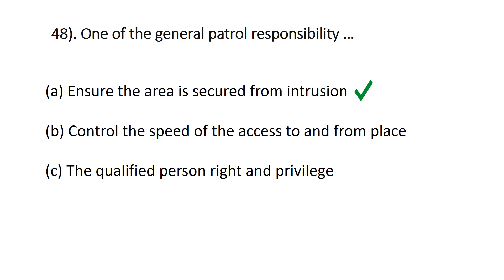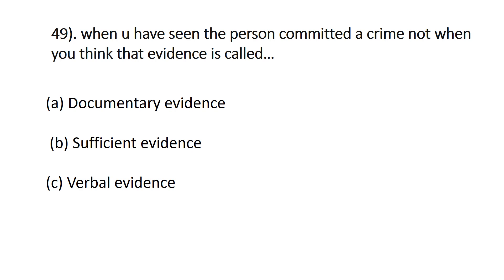Question forty-nine: when you have seen a person commit a crime — not when you think — the evidence is called — A) sufficient evidence, B) documentary evidence, C) verbal evidence. The correct answer is A, sufficient evidence, because you are not assuming — you have the evidence.